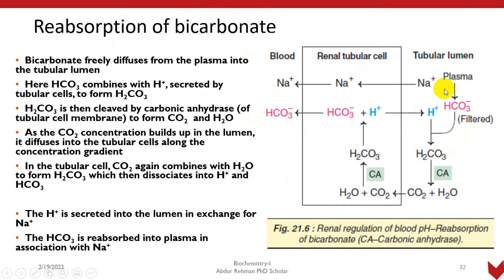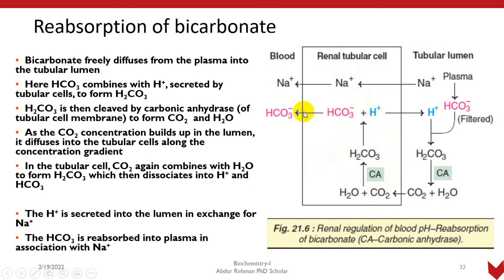The second mechanism — reabsorption of bicarbonate ions — has the same mechanism. Whatever bicarbonate is filtered from plasma into the tubular lumen, before it can be excreted it is reabsorbed. It combines with hydrogen to form carbonic acid, and carbonic anhydrase converts it back to carbon dioxide and water. Carbon dioxide and water diffuse back into the renal tubular cells down the concentration gradient, where carbonic anhydrase again forms carbonic acid, which then splits into bicarbonate and hydrogen. The bicarbonate is regenerated back into blood, while hydrogen ions return to the tubular lumen and are excreted in urine with a suitable base.